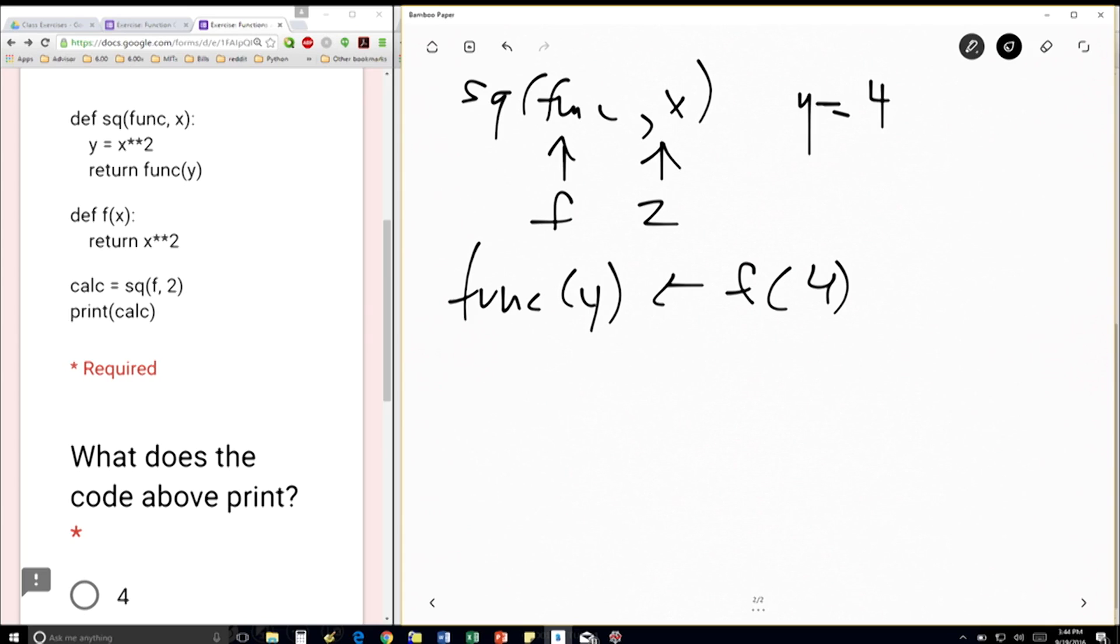So in f, x gets mapped to whatever variable we put in it, which in this case is 4. And we're going to return to whoever called us, which is over here, 4 squared, which is 16.